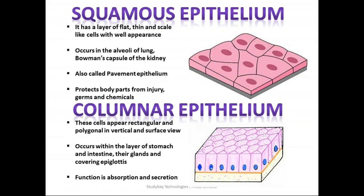The first type is squamous epithelium. As you can see in the diagram on the right side of your screen, it has a layer of flat, thin, and scale-like cells with a well-defined appearance where the nucleus is clearly visible. It occurs in the alveoli of the lungs or Bowman's capsule of the kidney. This is also called pavement epithelium. Its main objective is to protect body parts from injury, germs, or harmful chemicals.